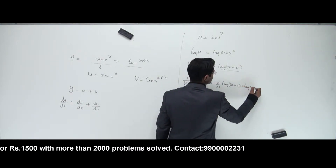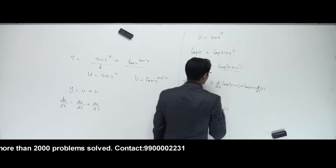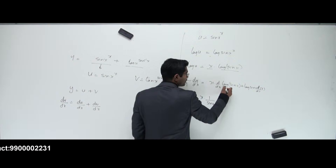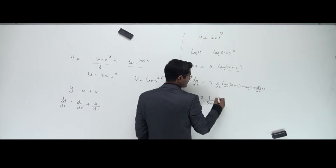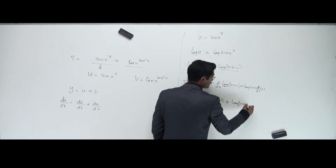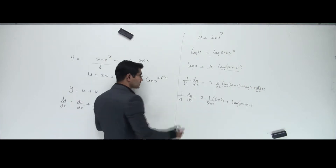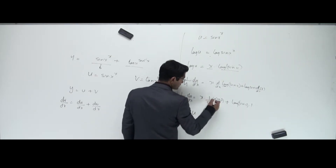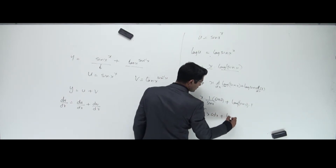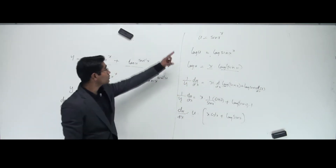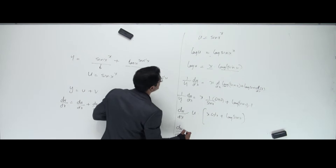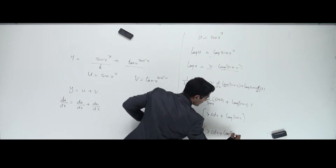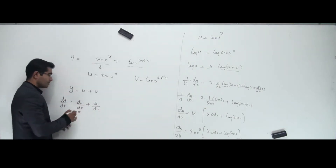So I get 1/u · du/dx = x · (1/sin x · cos x) + log(sin x) · 1. That simplifies to x·cot x + log(sin x). Therefore du/dx = u · (x·cot x + log sin x). Substituting back u = sin x to the power x, I get du/dx = (sin x)^x · (x·cot x + log sin x). That's du/dx done.